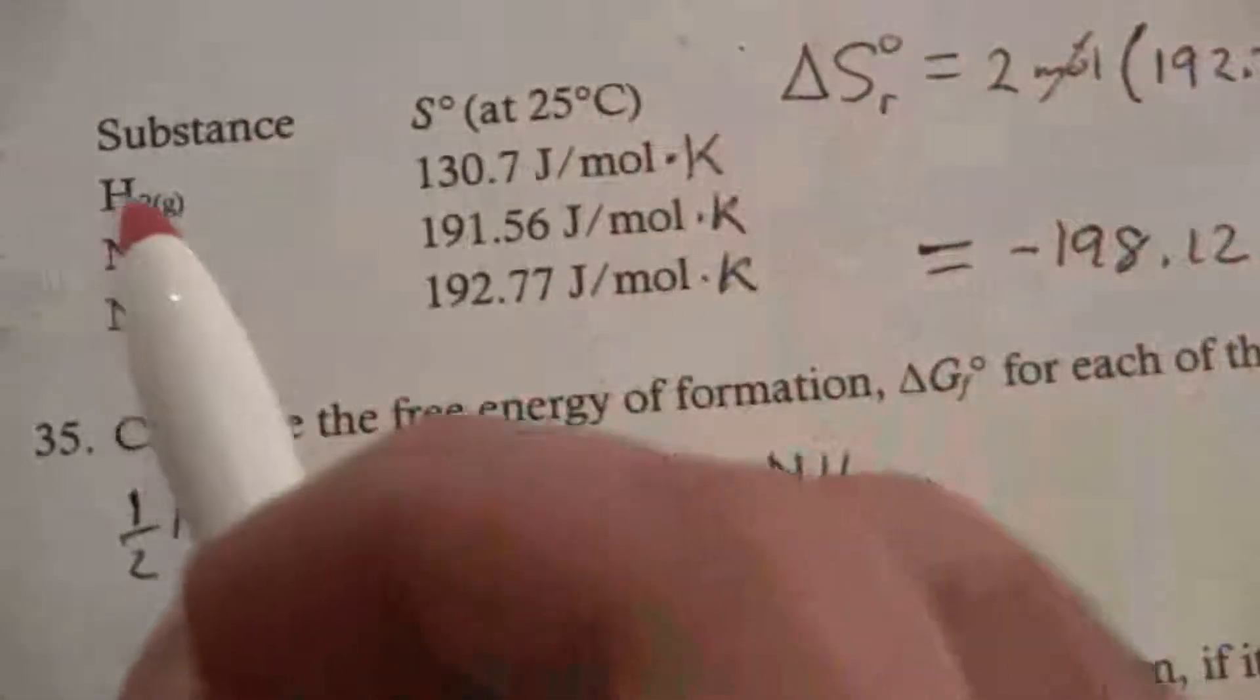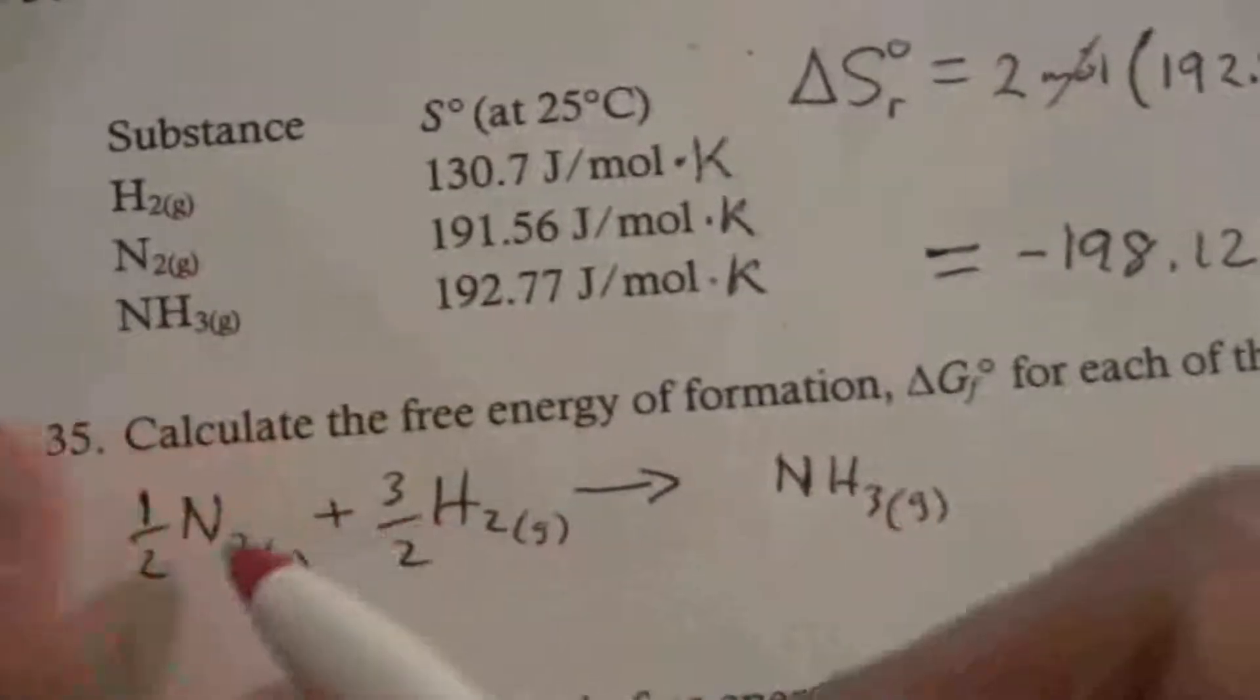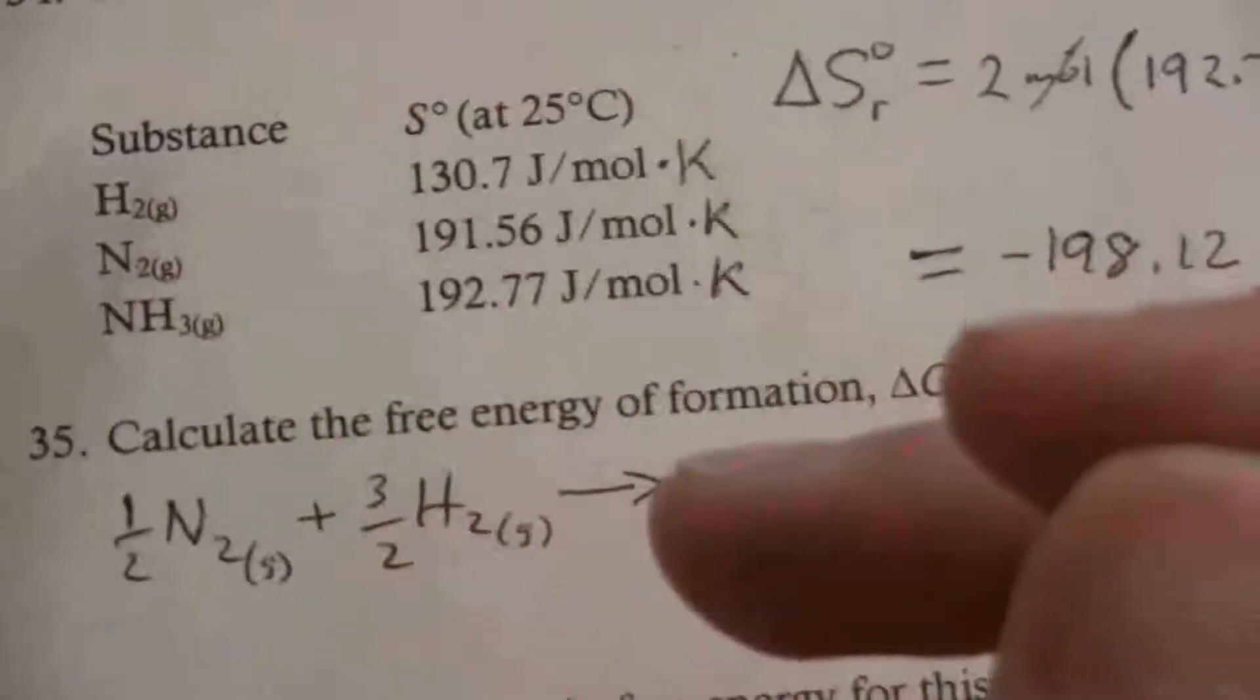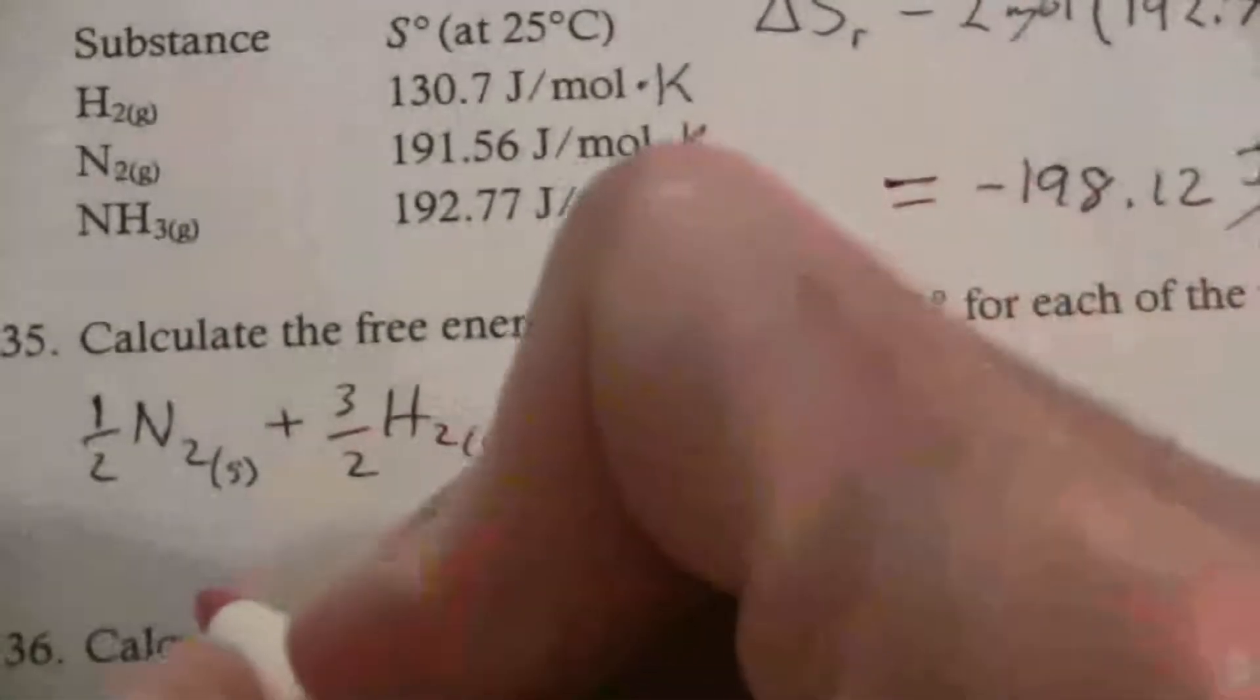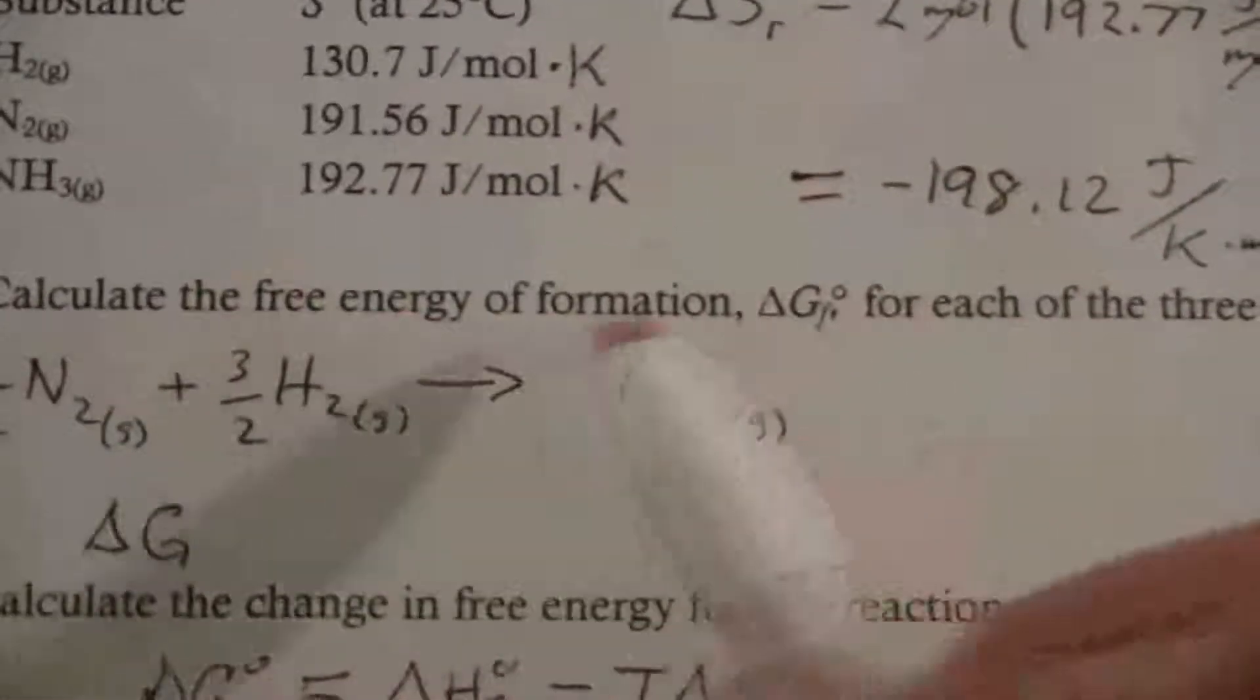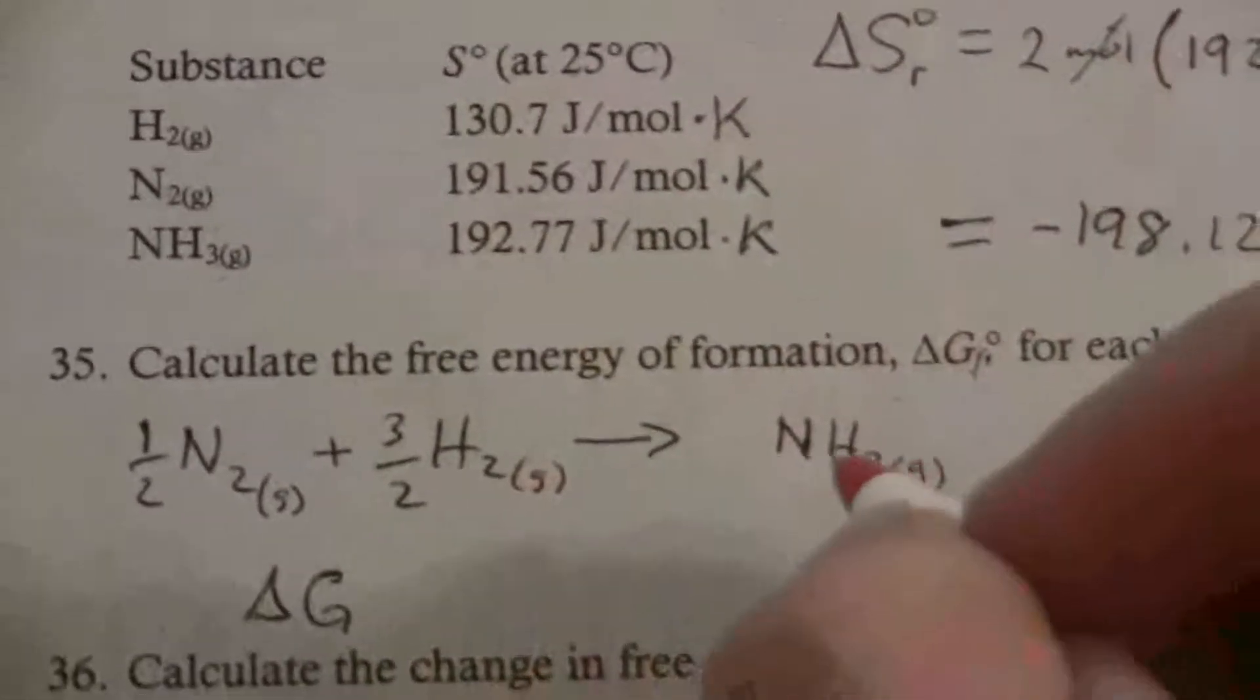The delta G of formation for the elements, by themselves, you'd have just hydrogen producing hydrogen, or nitrogen producing nitrogen. Same on both sides, so there's no difference in the delta G. The delta G for an element in its natural state will be zero. This particular question is saying to calculate the free energy of formation for each of the three species. Those two are just zero. So let's calculate the delta G for ammonia.